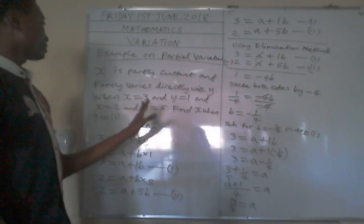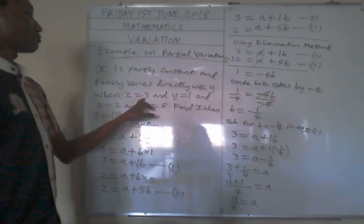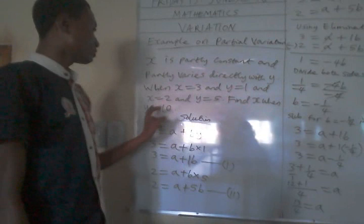This is partial variation, the fourth aspect of the types of variation that we are dealing with. x is partly constant and partly varies directly with y. When x is equal to 3 and y is equal to 1, and x is equal to 2 and y is equal to 5, find x when y is equal to 10.